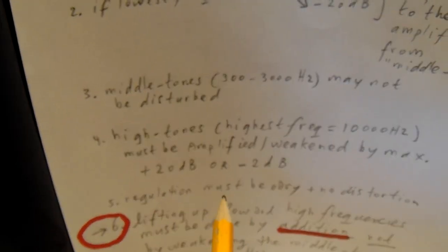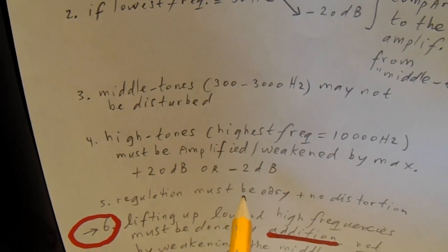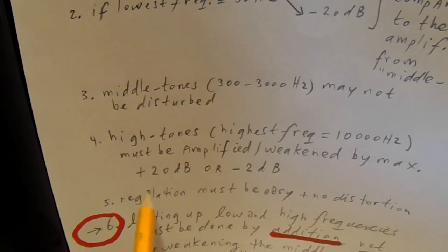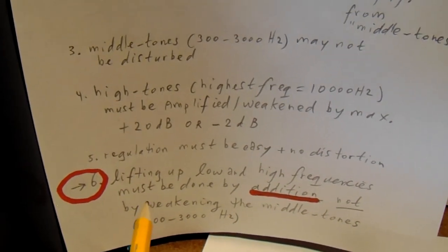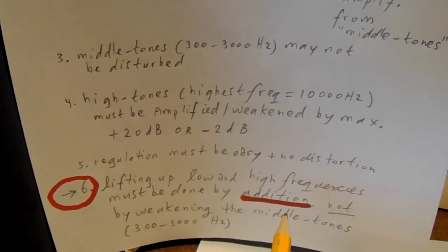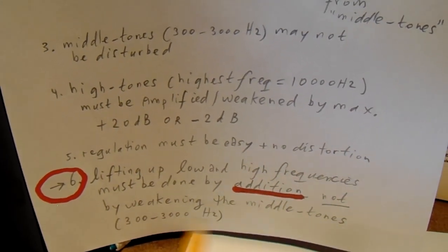The high tones, exactly the same, they must be amplified or weakened by 20 decibels. The regulation must have no distortion, must give no distortion. And here the most important conclusion from his circuit.